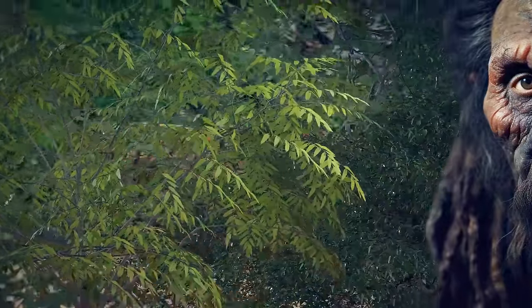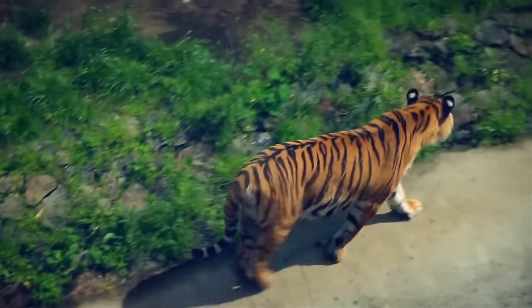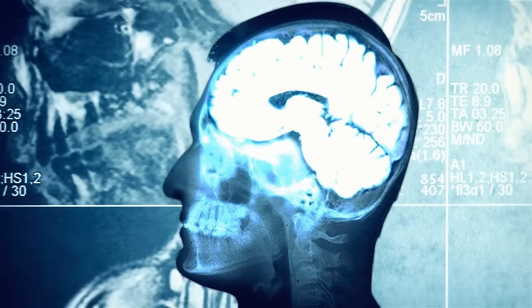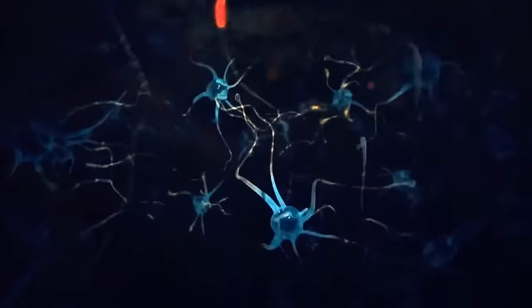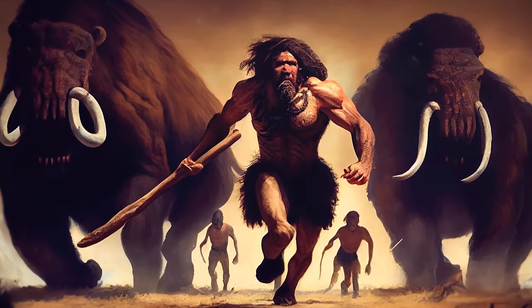Our brains got their shape from evolution. That long process where animals, including us, get to pass on the best features and data they've learned to their offspring. So if a trait like a certain shape of the brain helped our ancestors dodge a hungry tiger, that trait got passed down.